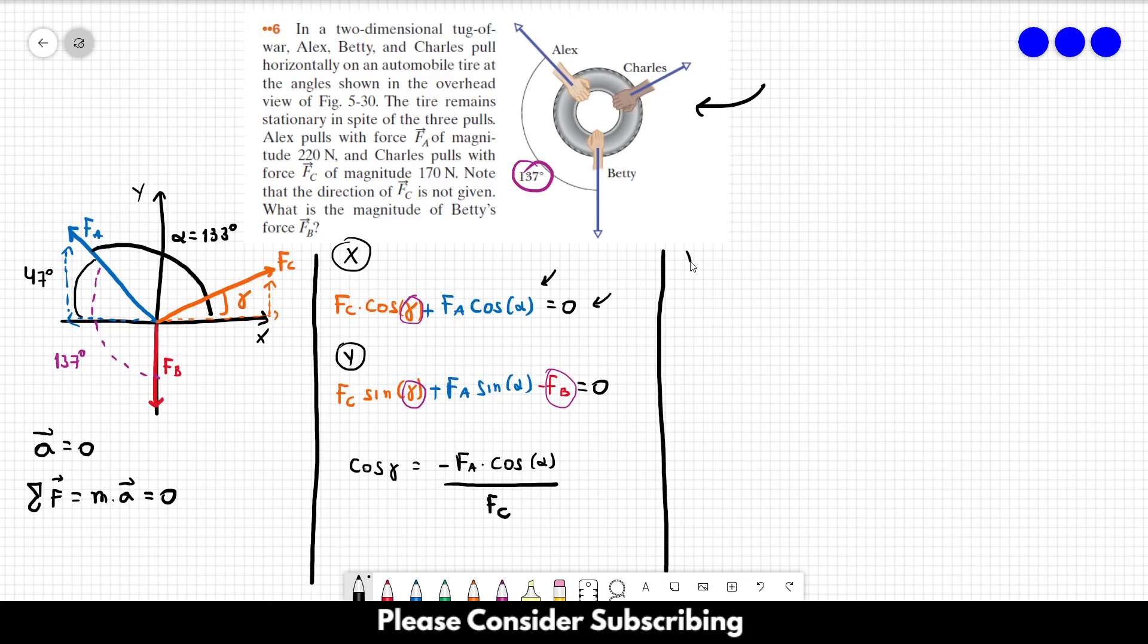Cosine of gamma is equal to minus FA times cosine of alpha divided by FC. And we know that gamma, so we want the angle. So gamma is the inverse function of the cosine. Cosine to the minus one of minus FA cosine of alpha over FC. And this gives us 28 degrees. So now we know gamma over here.